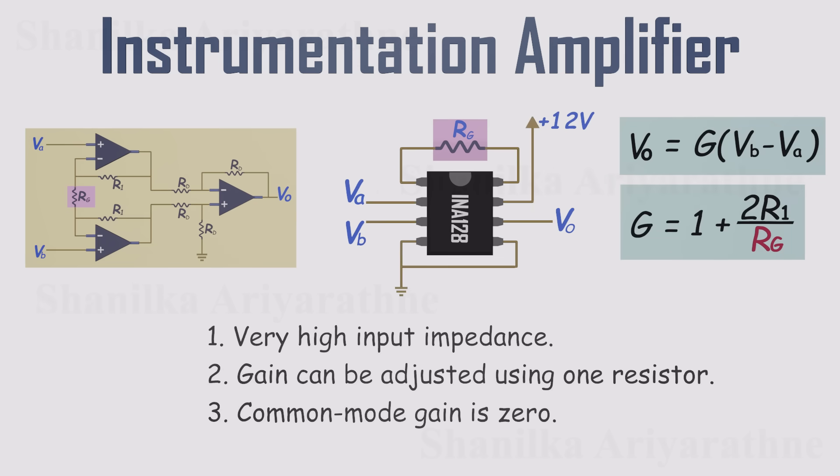This design gives us three major advantages. First, the input impedance is extremely high, so the amplifier draws almost no current from the sensor. Second, the gain is easily adjustable with just one resistor. And third, the common mode rejection ratio is so high that for all practical purposes we can ignore common mode errors altogether.